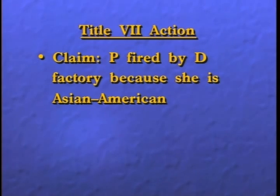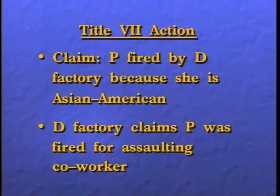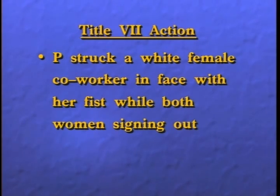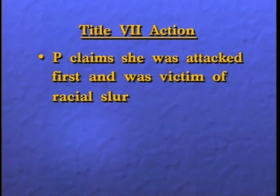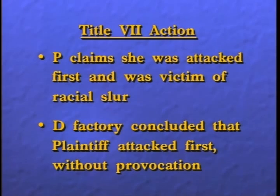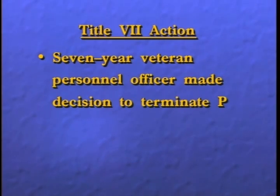These first two scenarios have taught us these are not easy issues. Let's see if it gets easier with a third scenario. The third one is a civil case — a Title VII action. The claim is that after two years on the job, the plaintiff was unlawfully fired by the defendant factory because she is an Asian American. The defendant factory claims she was fired for assaulting a co-worker on company grounds. Everyone agrees that plaintiff struck a white female co-worker in the face with her fist on company grounds while both women were signing out for the day. Time permitting, we're going to consider five pieces of potential 404(b) evidence in this scenario.